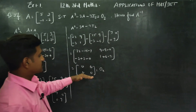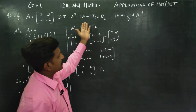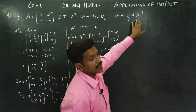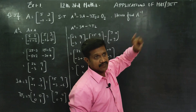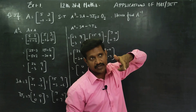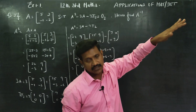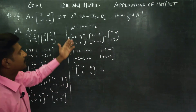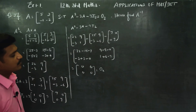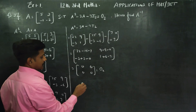This sum also allows you to find the inverse. How do you find the inverse? A inverse is 1 by determinant into adjoint. But if you use A² - 3A - 7I₂ = 0, you can find the inverse more easily.